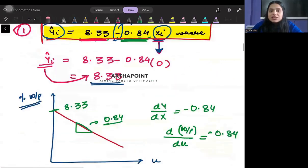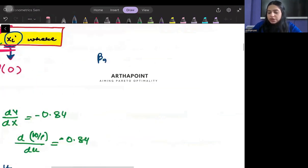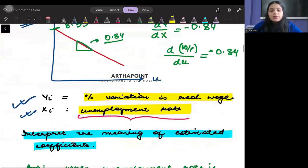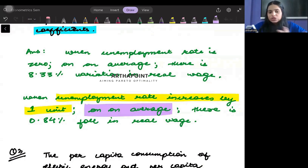Now because this is a regression line, if I were to interpret the value of minus 0.84, you need to remember that this yi hat will be in average terms. Ideally in a regression equation, whenever we talk about beta 2 hat, it represents the change in expected value of y when x changes. So this basically represents the change in expected value of y when there is a change in x.